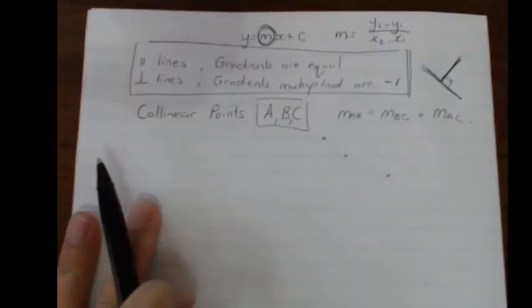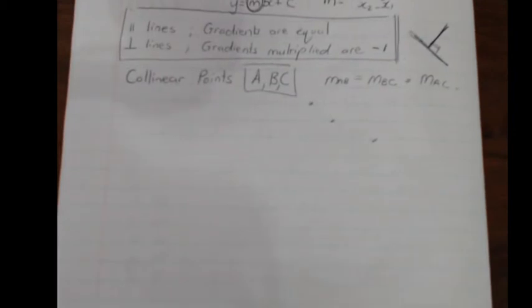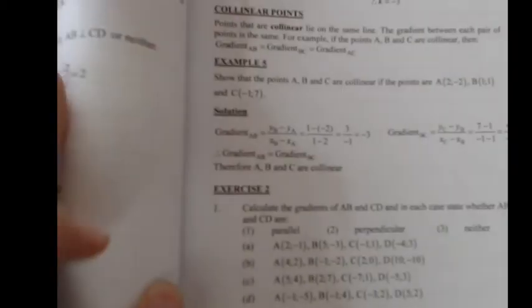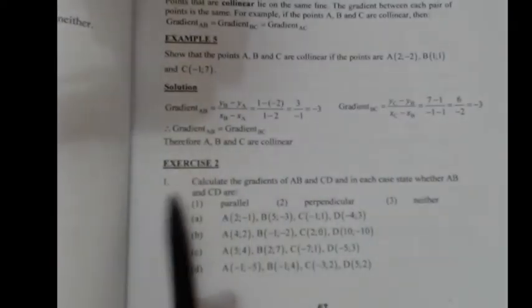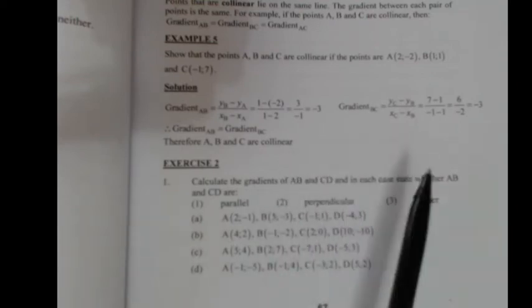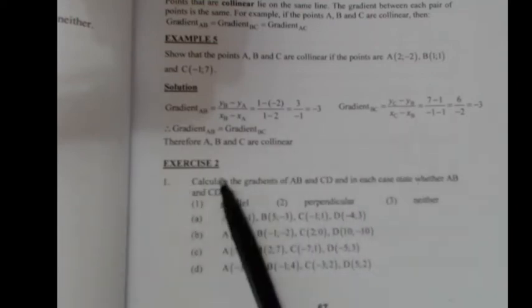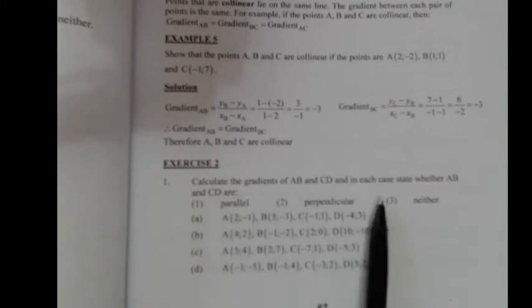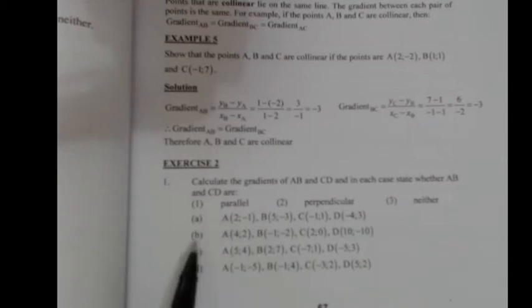Let's jump into exercise two. This is mostly about parallel and perpendicular lines — working with gradients that are equal or multiply to negative one. The first question asks us to calculate the gradients of AB and CD in each case and state whether AB and CD are parallel, perpendicular, or neither. We'll do A and B, and you can do C and D on your own.